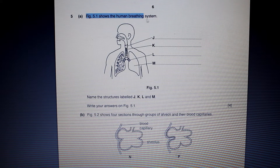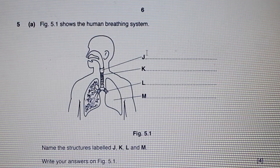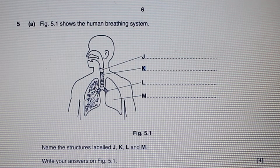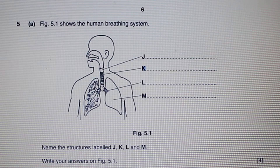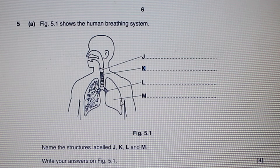Question five. Figure 5.11 shows the human breathing system — name the structures labeled J, K, L and M. J is our larynx. K would be our trachea, and here we can see it splits to the bronchus. L would be a bronchus. M would be our lung.